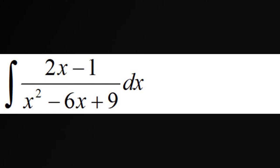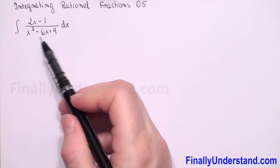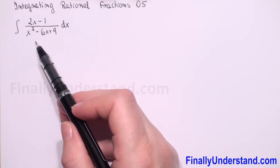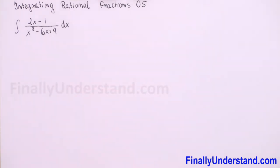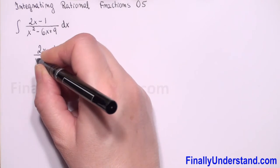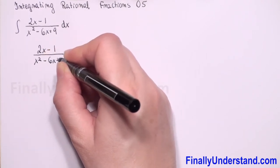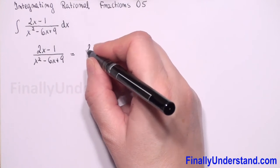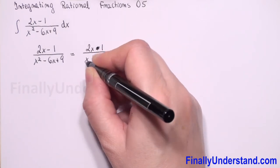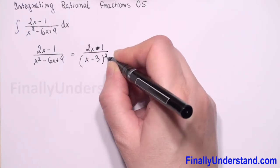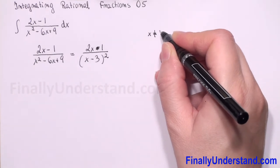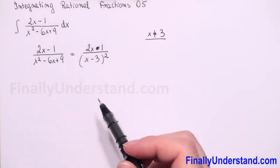We have the integral of a rational fraction. First we can rewrite our denominator — we have x squared minus 6x plus 9, which is (x minus 3) to the second power. So let me rewrite our rational fraction: 2x minus 1 over x squared minus 6x plus 9, equals 2x minus 1 over (x minus 3) squared. We cannot have 0 in the denominator, so x must be different than 3.